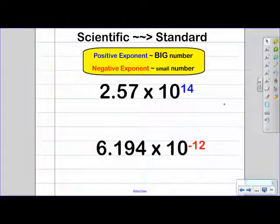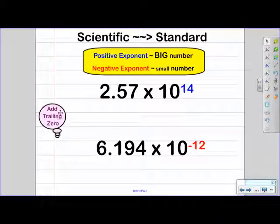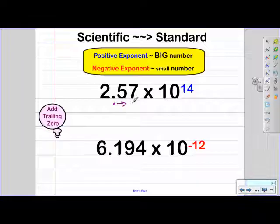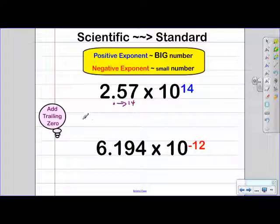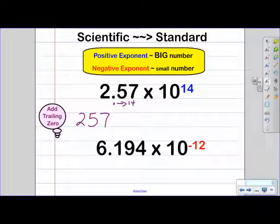Let's continue. On these two problems, we're going to be converting these numbers that are written in scientific notation into standard notation. First, we need to keep in mind that we're going to be adding trailing zeros. So we're going to take this decimal and move it to the right 14 times. We're going to start with our coefficient — our non-zero numbers 2, 5, 7 — and the decimal is starting here. We need to move it 14 times, so that's 2 out of the 14, which now leaves 12 more times that I need to move the decimal.